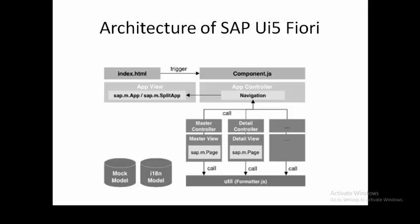Let us take a quick look at the architecture of SAPUI5 Fiori. Initially, an index.html page is triggered, which in turn triggers a component.js. In component.js we define an application component, also called a component container, which contains the application view — which could either be an app or a split app.